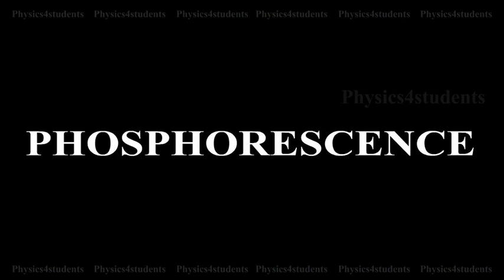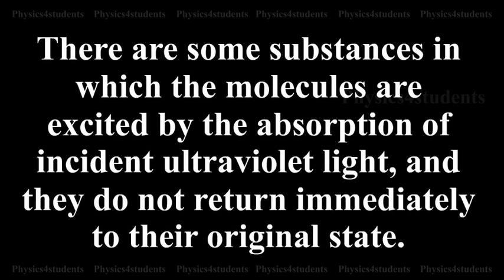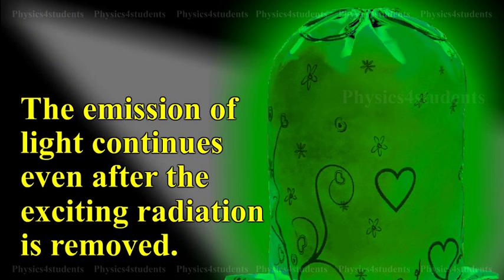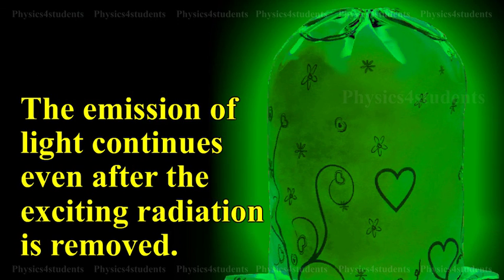Phosphorescence. There are some substances in which the molecules are excited by the absorption of incident ultraviolet light, and they do not return immediately to their original state. The emission of light continues even after the exciting radiation is removed. This type of delayed fluorescence is called phosphorescence.